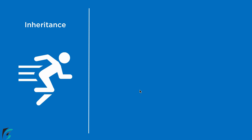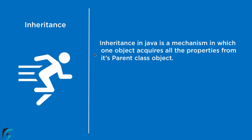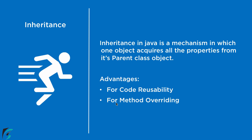So at the end, let us define what inheritance is in Java. Inheritance is a mechanism in which one object acquires all the properties from its parent class object — as simple as that. Now what are the advantages of inheritance in Java? When we use inheritance, we actually remove all the redundant code — we reuse the code, as we just saw in the cat, dog, and animal example. So it simply promotes code reusability. And we also have the concept of method overriding, which states that you can simply reuse the methods present in the parent class inside the child class. I will talk about method overriding in upcoming videos.